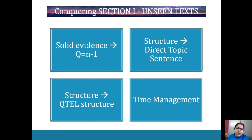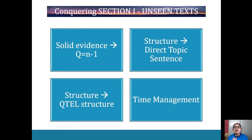If the question asks how does this text represent the human experience of discovery, you don't want to just say 'the text represents human experience of discovery and allows individuals to...' — you're repeating what's already in the question. What you need to do is say the text represents the human experience of discovery through the experiences of the little boy who is discovering himself in the hot air balloon. Be specific. If a question asks how does the text use language features to give insight into human experiences, say: the text uses language features like symbolism and metaphors in order to allow readers to gain insight into the human experience of loneliness.